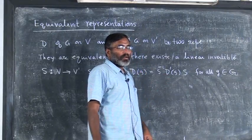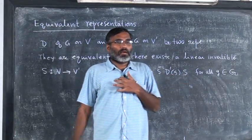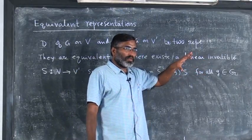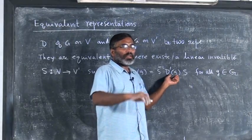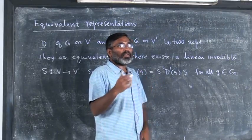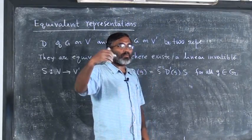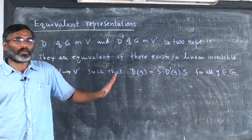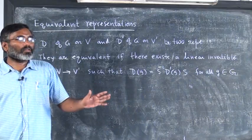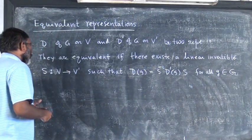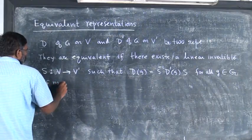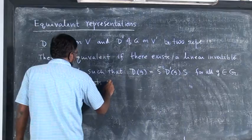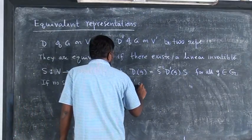You can immediately realize that if I have a vector space and choose a basis, I can write down a matrix for this representation. If I change the basis, the matrix will be different, but I will not get an inequivalent representation — because change of basis means the matrices are related by a similarity transformation. So change of basis produces an equivalent representation. If no such S exists, then D and D′ are inequivalent.